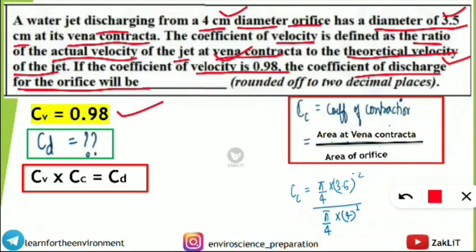Let's write what is given: cv (coefficient of velocity) = 0.98. We need to find cd (coefficient of discharge). The key formula — the Brahmastra formula — is: cv × cc = cd, where cv is the coefficient of velocity, cc is the coefficient of contraction, and cd is the coefficient of discharge.